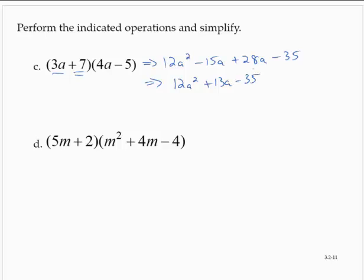We would use a similar process for exercise d. The only difference is now we have a trinomial as the second factor rather than a binomial. So taking the 5m through the first polynomial gives 5m cubed, plus 20m squared minus 20m. And then taking the 2 through, giving 2m squared, plus 8m, minus 8. Combining like terms,